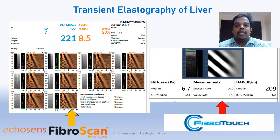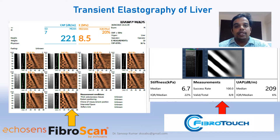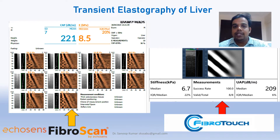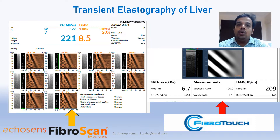Transient Elastography of the Liver — whether Fibroscan or FibroTouch — is used to diagnose two things: first, steatosis or fatty liver; second, the degree of fibrosis or cirrhosis in suspected patients. You will commonly encounter scenarios where a patient's ultrasound report shows fatty liver and you want to know how severe it is, or whether fibrosis or cirrhosis is present. When patients bring you these reports, you should know how to interpret them.